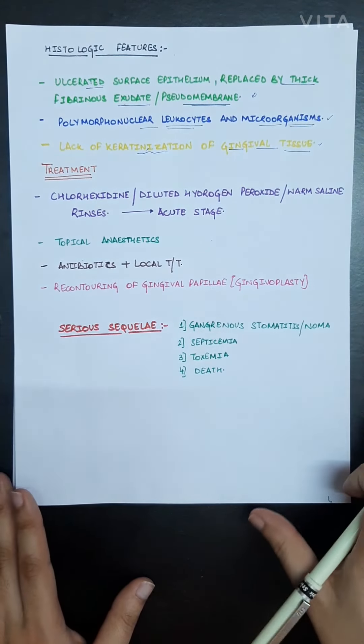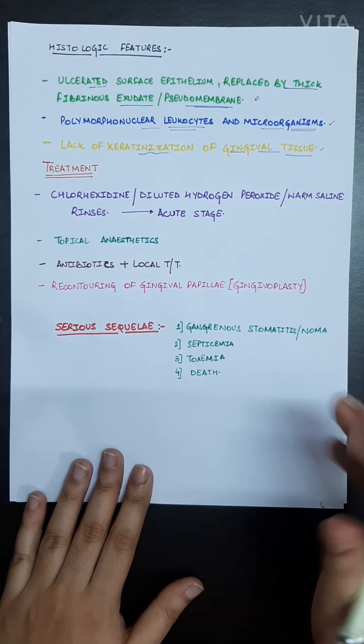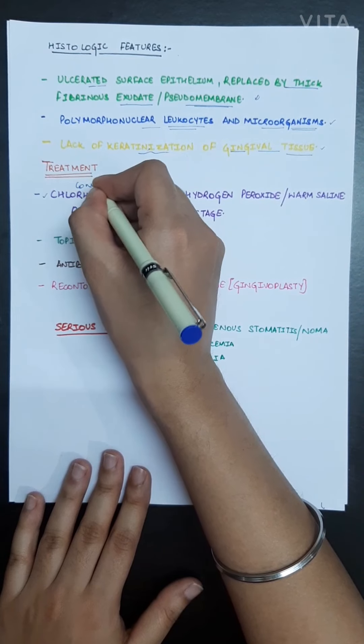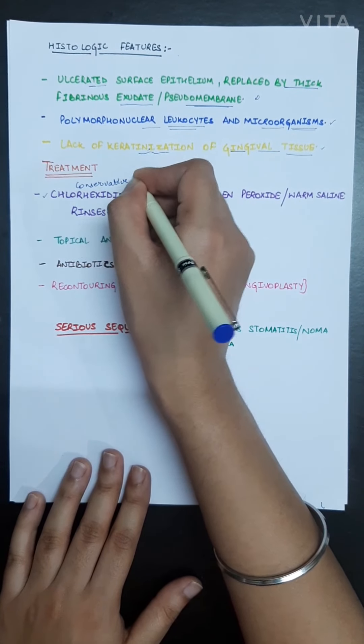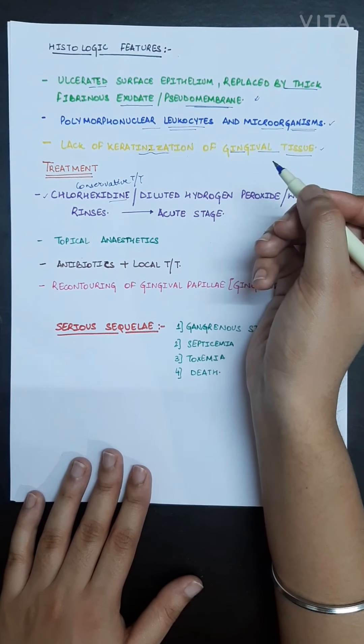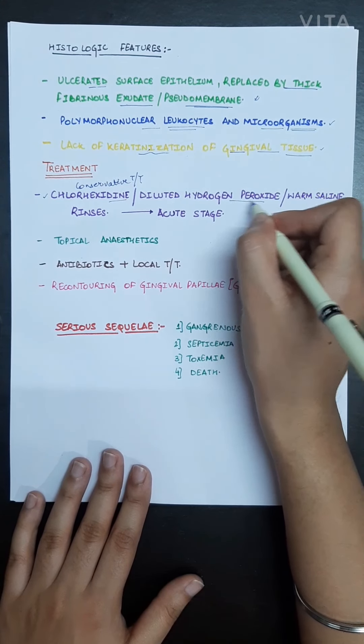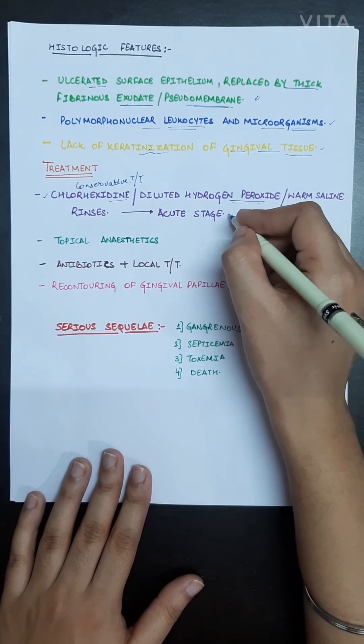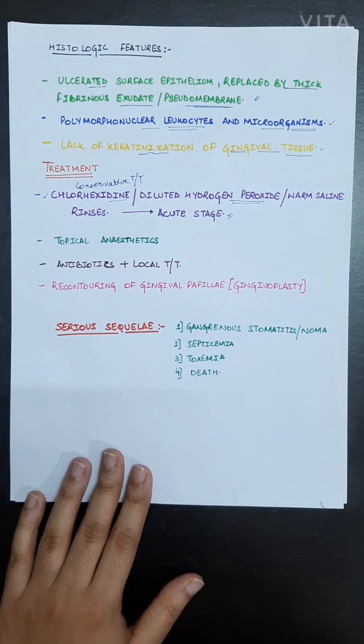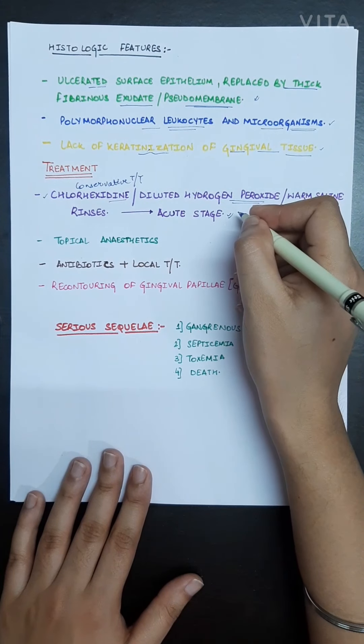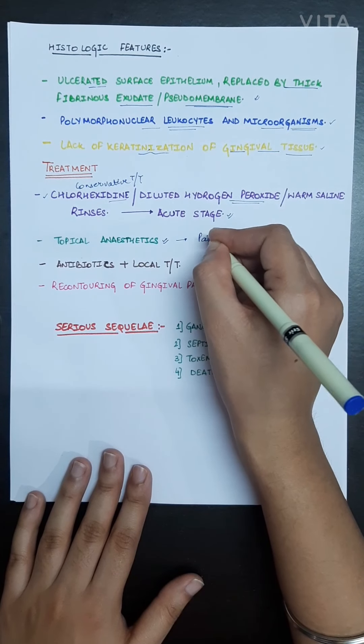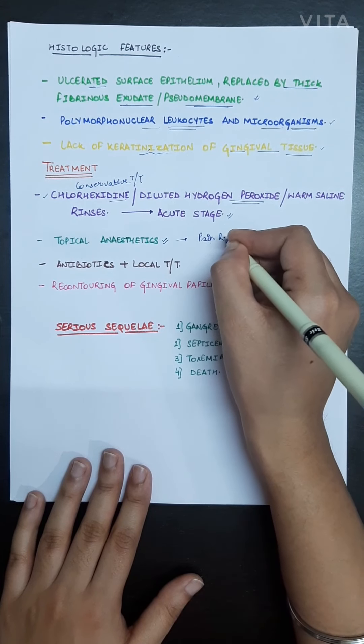Now the treatment part: conservative treatment includes chlorhexidine mouthwash rinses or dilute hydrogen peroxide rinses, warm saline rinses at acute stages in initial stages will help in treating this disease. Topical anesthetics for relieving pain.